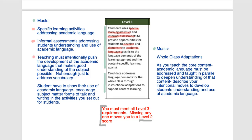The third thing: teaching must intentionally push development of the academic language that makes good understanding of the subject matter. Remember, it's not just enough to adjust vocabulary. This is all to increase their learning, not just to give attention to the language — the language itself is improving and making possible the learning. Your activities and assessments are helping you to use academic language as a lever to improve their learning. Students have to show their use of academic language, so you want to encourage subject matter forms in talk, writing, and the activities you set out. If you have students working in problem-solving, they should talk like mathematicians. If students are doing peer editing in a writer's workshop, they should be talking to each other like editors.